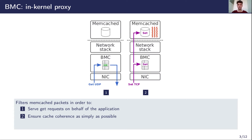First, BMC does not know the order in which set requests are processed by Memcached threads, so updates on the same data can be performed in different orders between the two caches. The update order is not simple to enforce without a costly synchronization mechanism. Second, TCP flow control mechanisms could reject new segments after the execution of BMC. In this case, the update is never performed in the main Memcached cache, so it should not be done in the BMC cache either. Instead, set requests are simply used by BMC to invalidate cache entries.